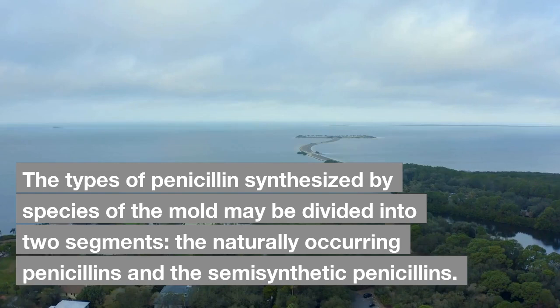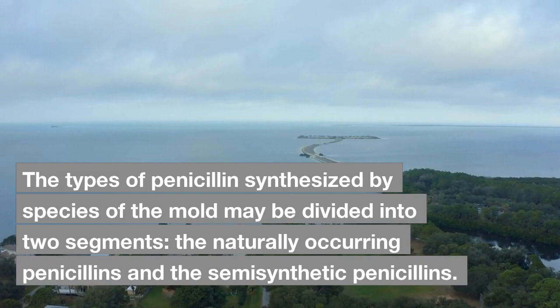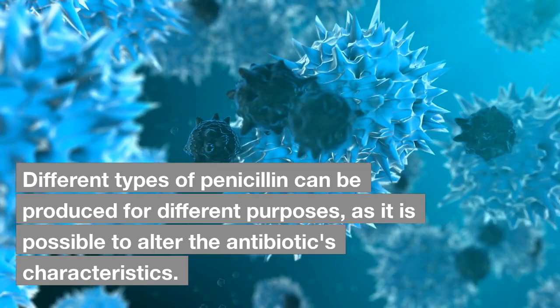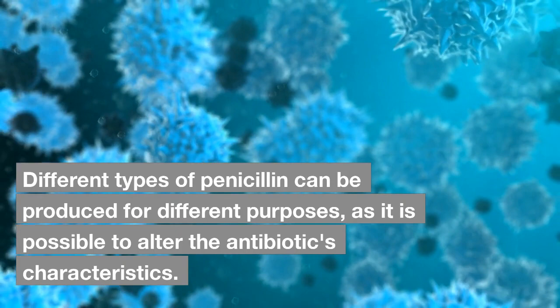The types of penicillin synthesized by species of the mold may be divided into two categories: the naturally occurring penicillins and the semisynthetic penicillins. Different types of penicillin can be produced for different purposes, as it is possible to alter the antibiotic's characteristics.